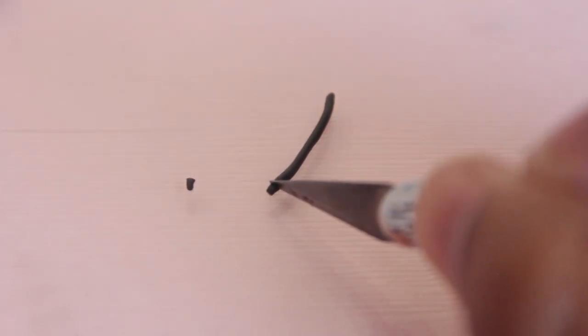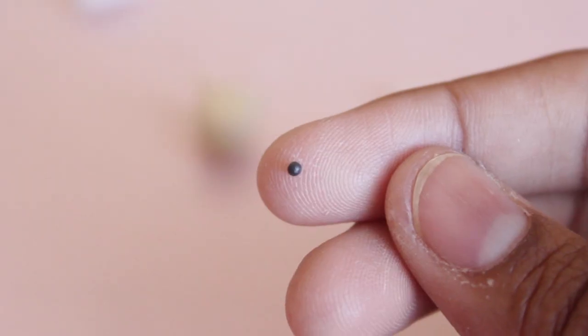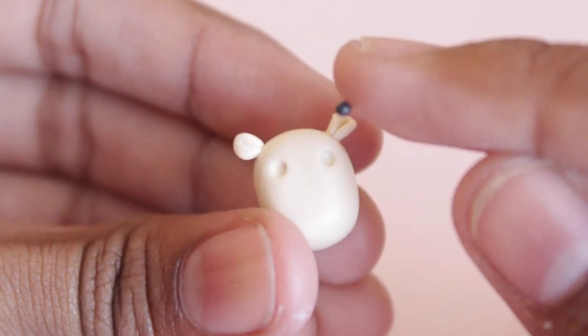For the eyes, I took two pieces of the clay and shaped them into balls and I placed them into the indents that I made.